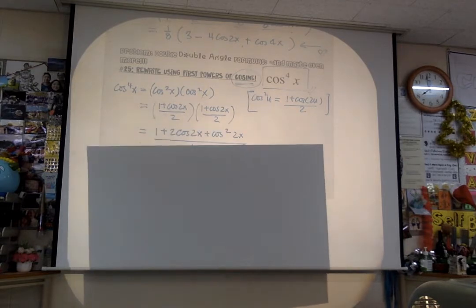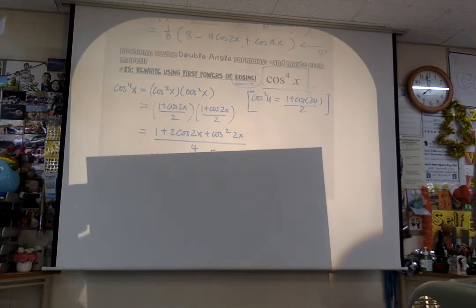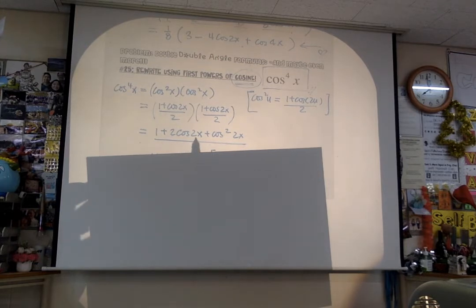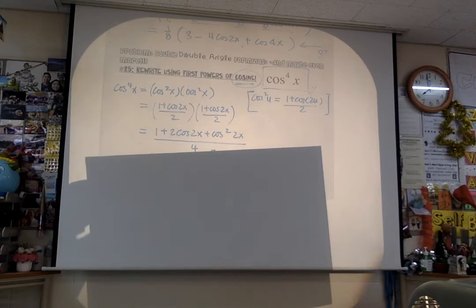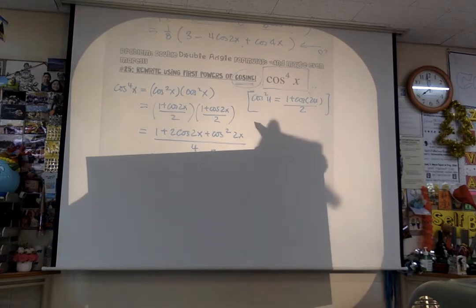Now I'm going to multiply that out. I got 1 plus 2 cosine 2x plus cosine squared 2x, all over 4. When I multiply that, that's what I end up with. Now, now, now!